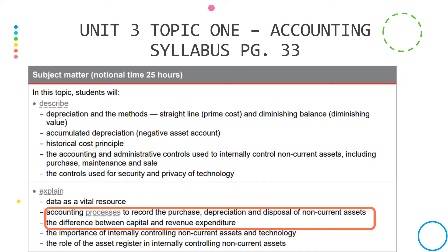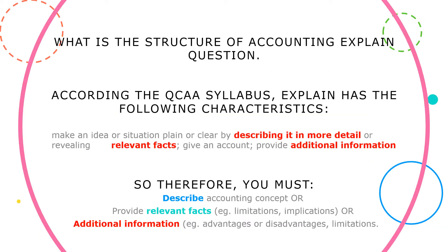We're going to go through how to account for the different types. If you look at the structure of what an accounting explained question actually looks like according to the QCAA syllabus, explained has the following characteristics - describing it in more detail. First of all, you're going to have to define what each accounting terminology is for that particular question. So if you have one looking at explaining the difference between revenue and capital expenditure, you would have to define what revenue expenditure is and also what capital expenditure is.